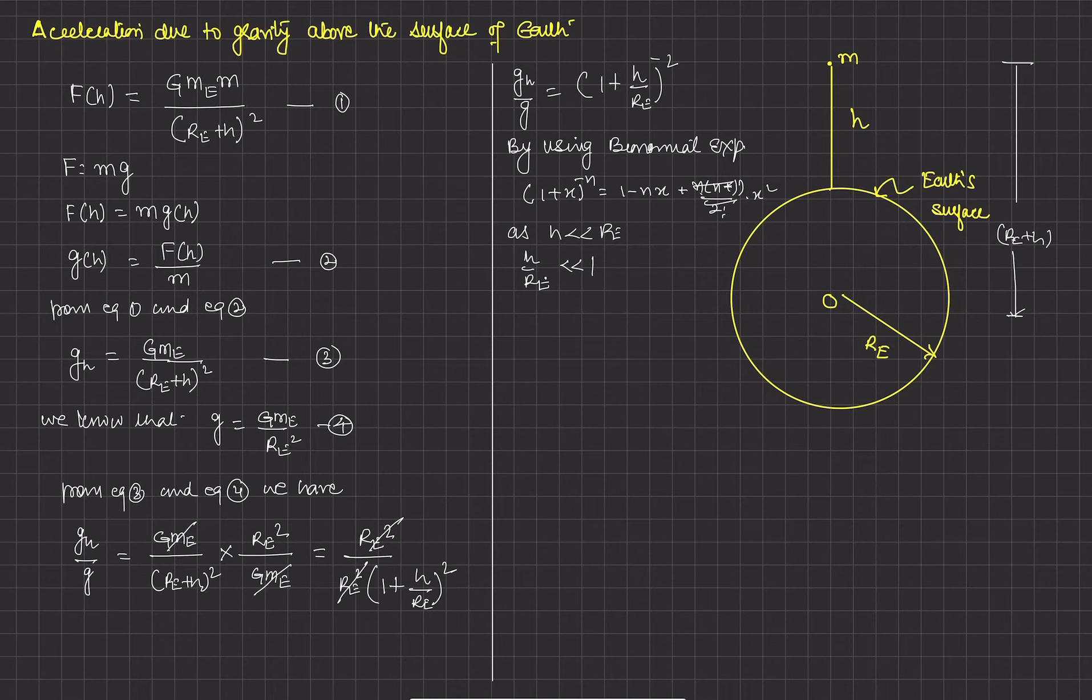Here x is h upon r_e and n is minus 2. So we have now gravity at a height h equals g times (1 minus 2h upon r_e), this is the radius of earth. So if we expand this, we get g_h equals g minus 2gh upon radius of earth.